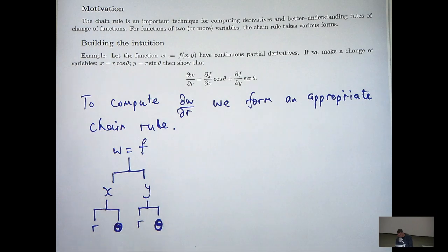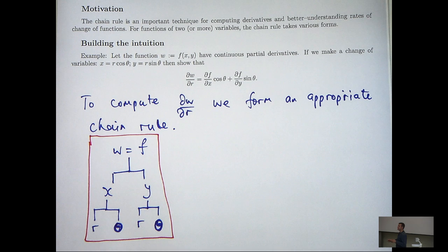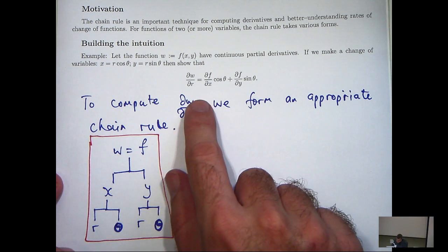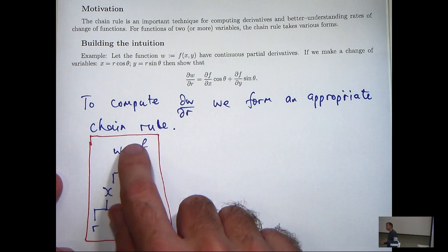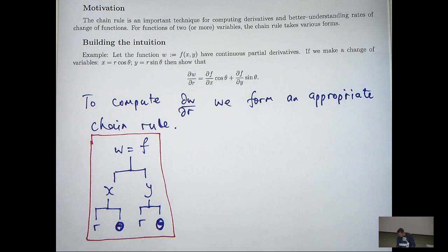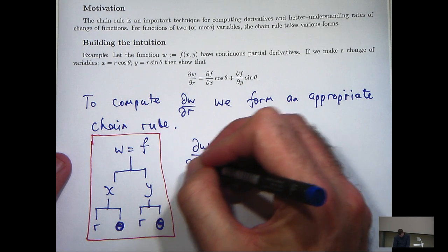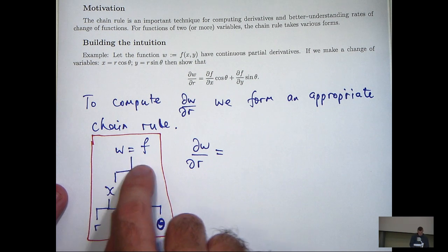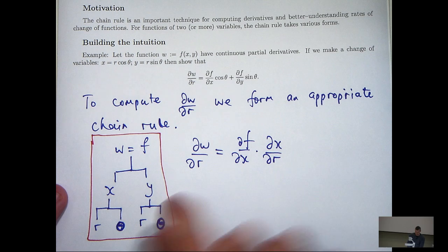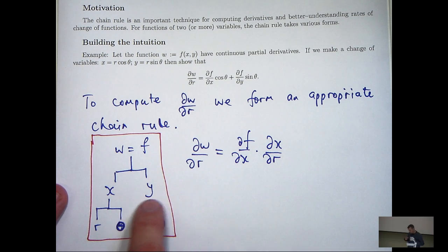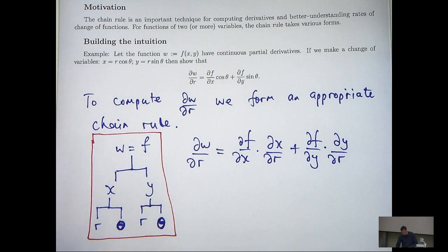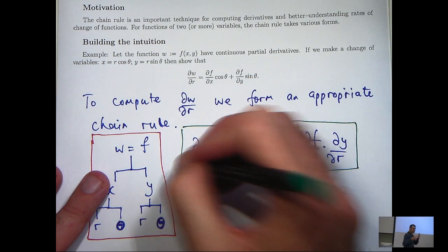Now what I can do is actually use this little diagram to formulate the chain rule to calculate dw/dr. What I do is, I start at the top, and because I want to calculate dw/dr, I look at all the branches that take me down, all the paths that take me down to an r. So I can go down this path here, or this path here. When I move from letter to letter, I form a derivative. So, let's systematically work through this. df/dx times dx/dr. And I go down the other branch, df/dy times dy/dr, and I add these together.